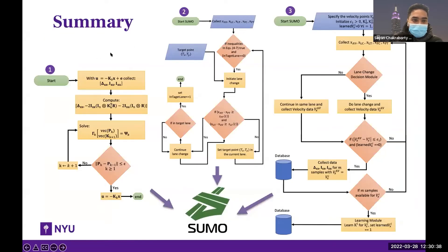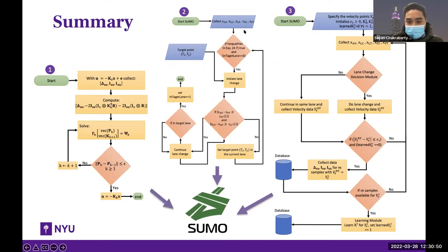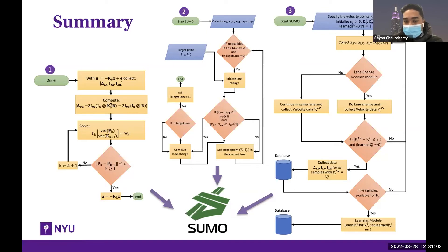To summarize Part 1: we have designed a data-driven optimal model-free controller, a data-driven lane changing decision making model, and a gain scheduling controller using the optimal data-driven controller, so that our method can handle uncertainties in the model and non-linearities. All proposed techniques were applied in SUMO simulation for validation. Part 2 will be taken over by Lele.